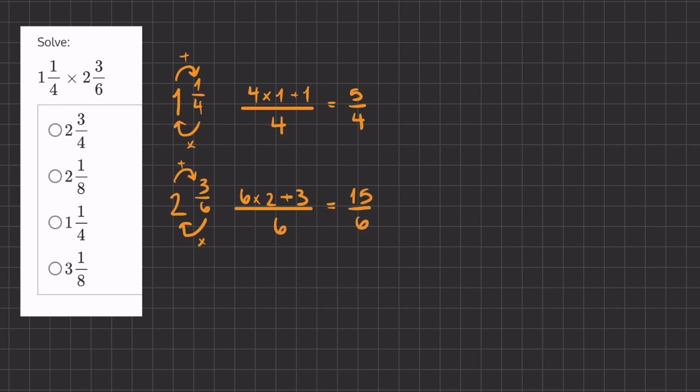Now we have a simple multiplication of two improper fractions. So we have 5 over 4 times 15 over 6. 5 times 15 is 75. 4 times 6 is 24.